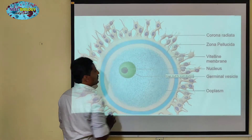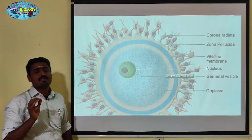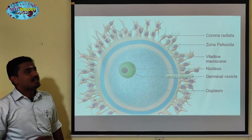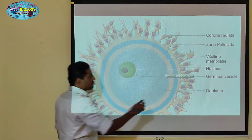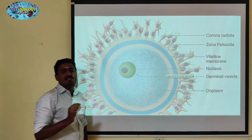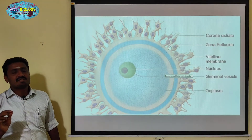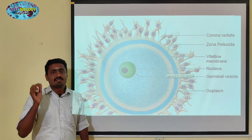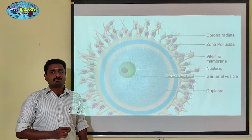This region is the germinal vesicle — in English, the germinal vesicle — consisting of a haploid chromosome number.